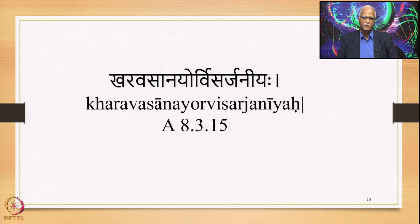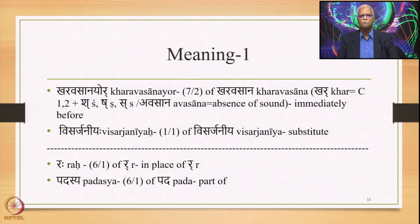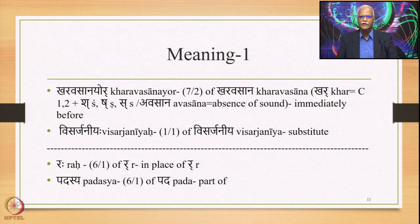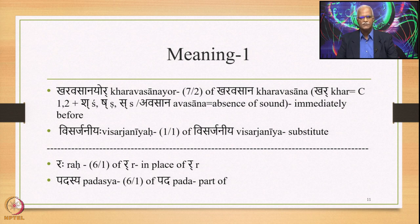Let us first take up the sutra Kharavasanayor Visarjaniyah 8.3.15 — a very important sutra. This sutra has two padas: Kharavasanayoh and Visarjaniyah. Kharavasanayoh is the seventh case dual of Kharavasana. Khar means consonants 1 and 2 — that is Kk, Chch, Tt, Tt, Tt and Pp — plus Sh, Sh and Sa, and of course Avasana, meaning absence of any sound. Visarjaniyah in 1/1 is the substitute.